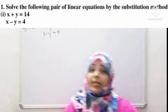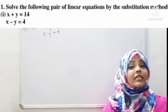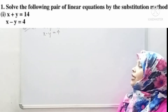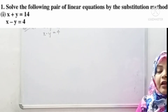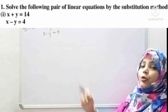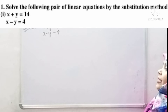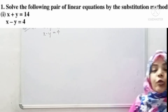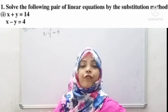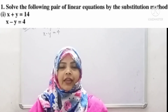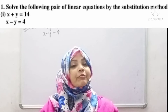First question — what does the first question say? The question says: solve the following pair of linear equations by substitution method. First is given: x plus y equals to 14, and x minus y equals to 4. Solving the problem means we have to find the value of x and y using the substitution method.